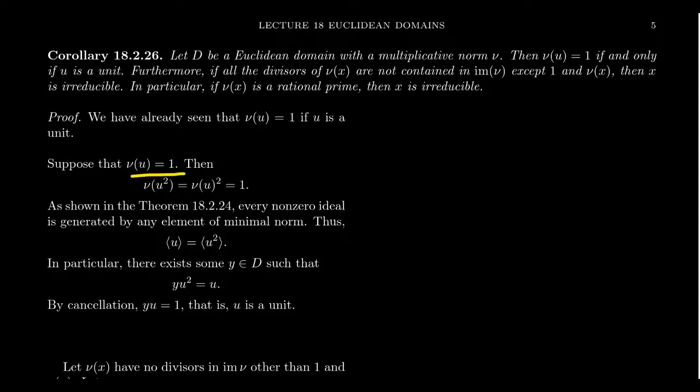Suppose that the norm of your element u, which we don't necessarily know is a unit yet, suppose it's equal to one. What if you take then the norm of u squared? Since it's multiplicative, this will be the same thing as the norm of u squared, where now, instead of squaring the element of the domain, we're squaring the natural number, nu of u, right there. So this would then be equal to one, because it's going to be one times one.